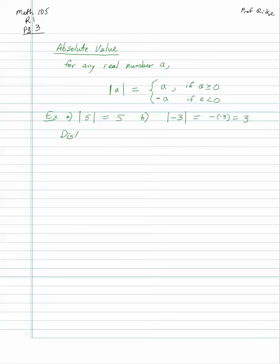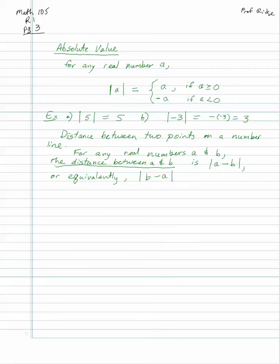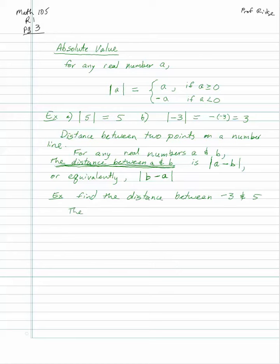You can also use absolute value to find the distance between two points on a number line. For any real numbers A and B, the distance between them is the absolute value of A minus B, or equivalently the absolute value of B minus A — order doesn't matter. For example, the distance between negative 3 and 5 is the absolute value of negative 3 minus 5, which equals the absolute value of negative 8, which is 8.